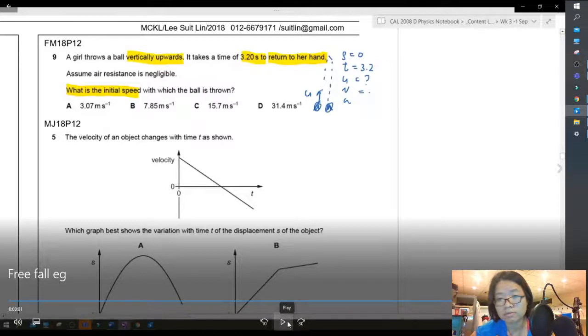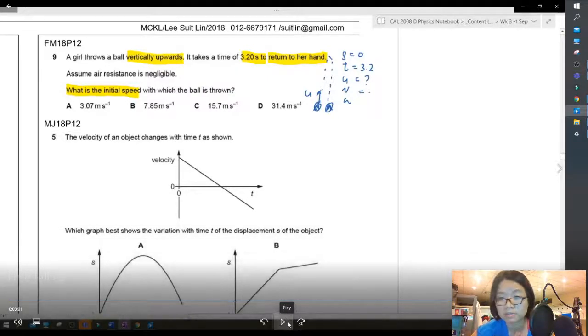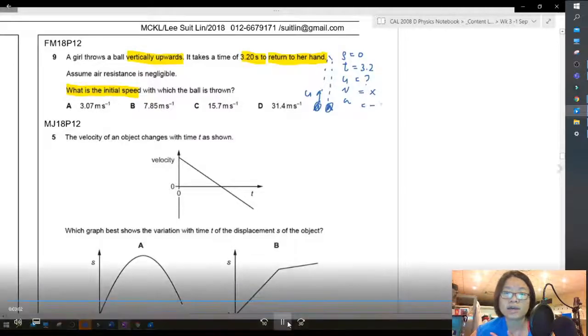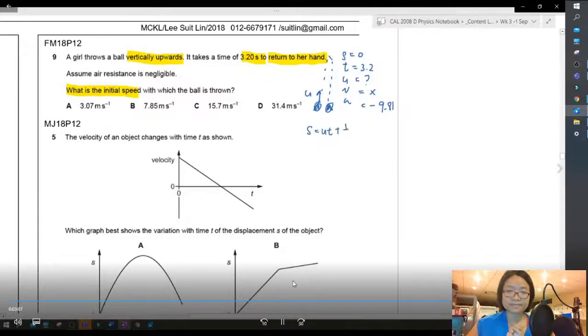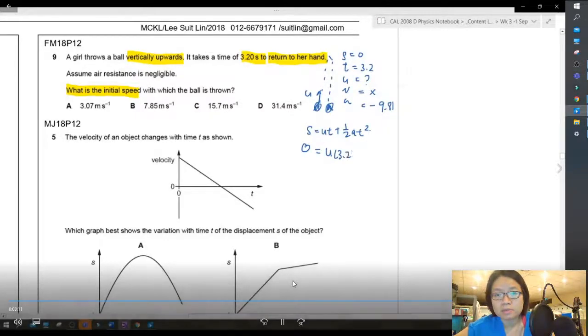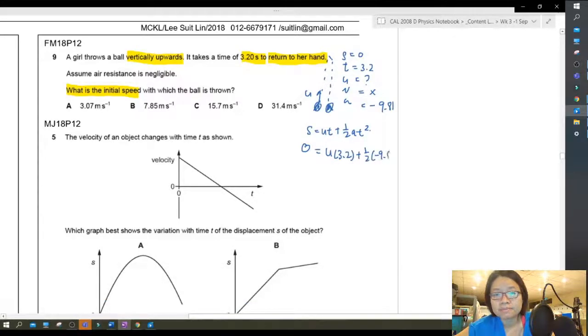We are looking for the initial speed. Again, it's not a concern to think about the final speed, and we know the acceleration, which is negative 9.81. Alright. So I'll use s is ut plus half at square again, substituting all the values in. Alright. So just pressing the calculator, and then I'll get the answer as about 15.7.